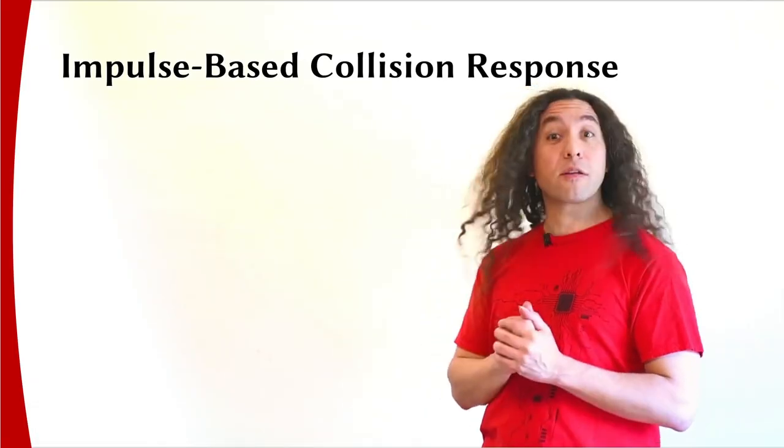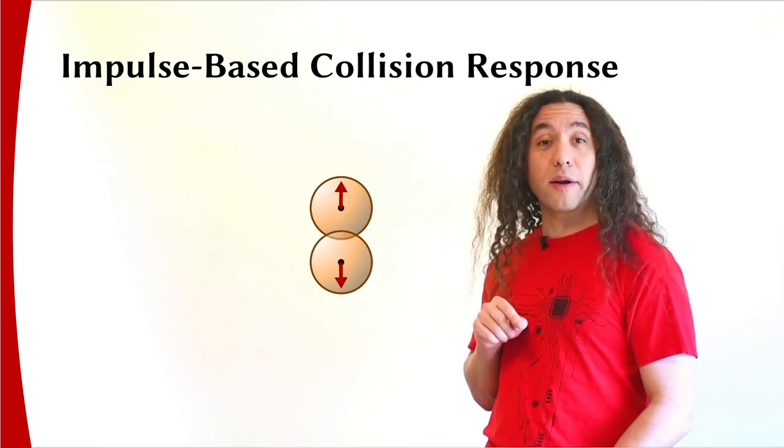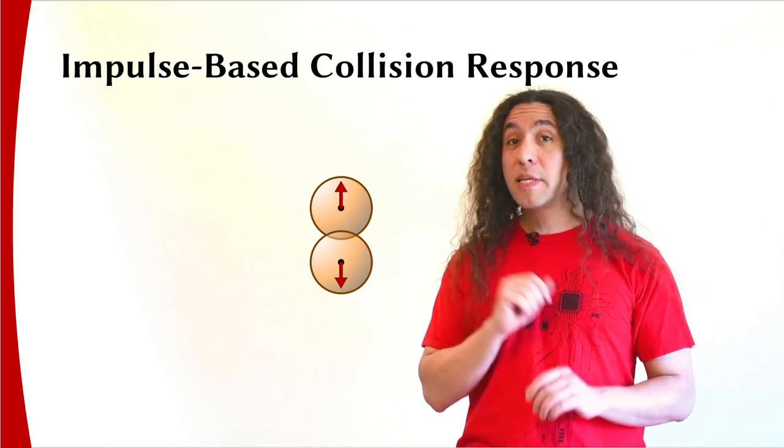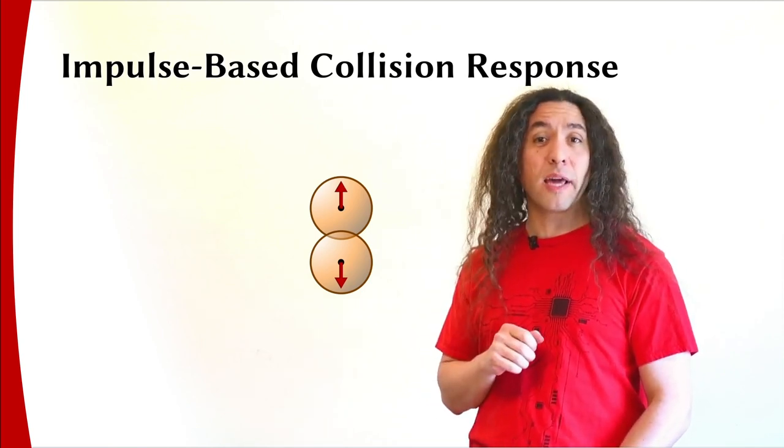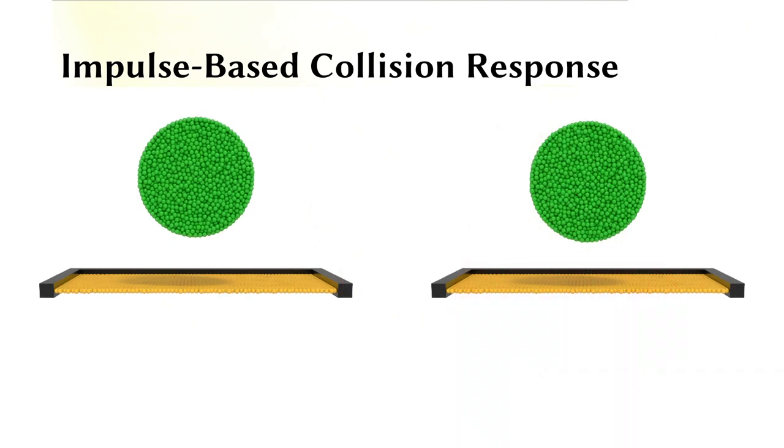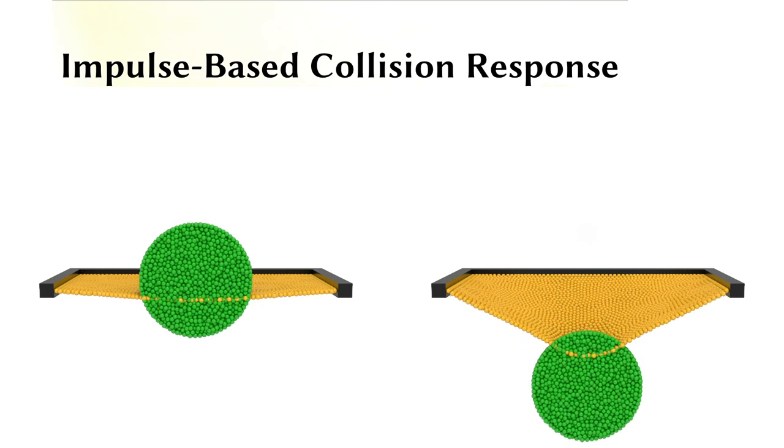Another common approach is impulse-based collisions, where we directly modify the velocities of colliding particles. Here, there is no artificial stiffness parameter, but as you will see in a moment, particle-level impulses are not sufficient for properly handling collisions. Here is the same example with the same ball with two different initial velocities, and neither case is properly handled by impulse-based collisions.